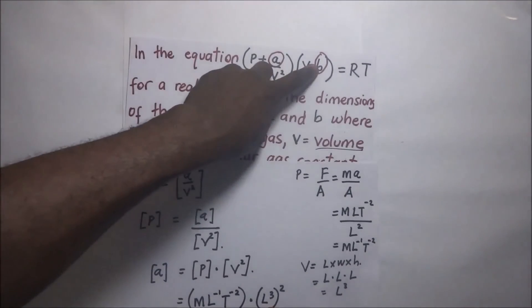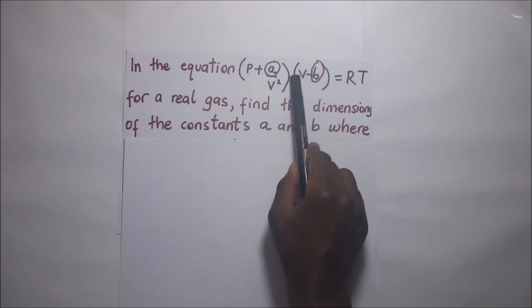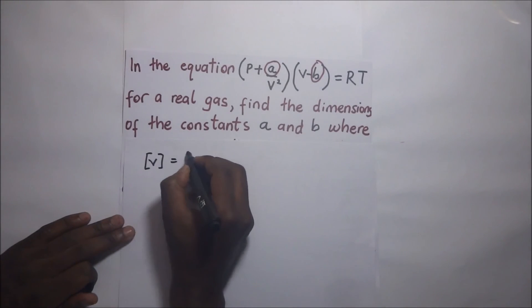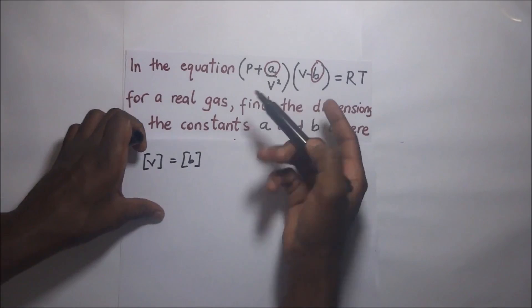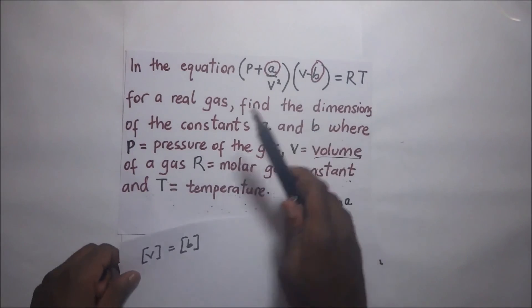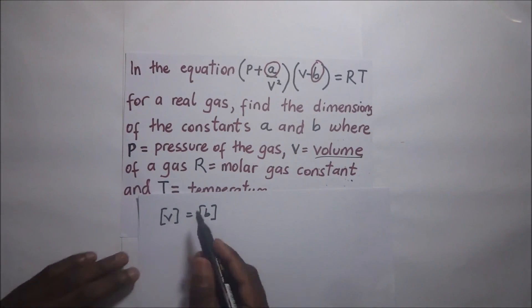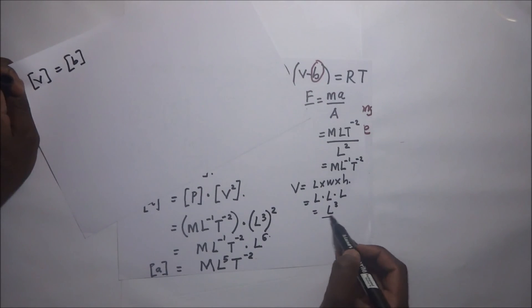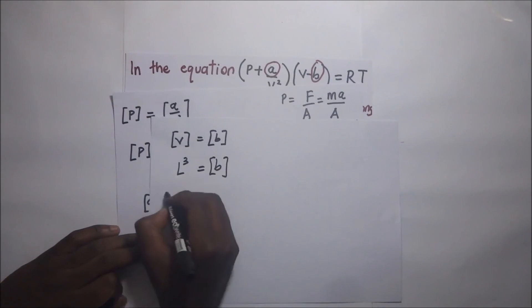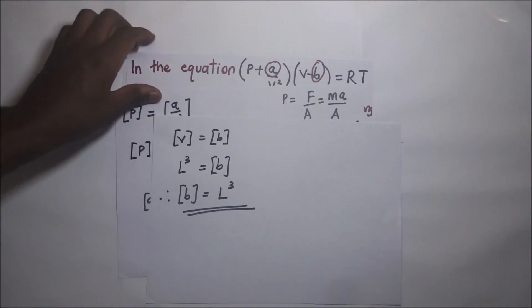To find the dimensions of B, we look at V minus B. The dimensions of V must be the same as the dimensions of B since they are being subtracted. According to the question, V stands for volume — not velocity. Volume is L cubed, as we already established. Therefore the dimensions of B are L cubed.